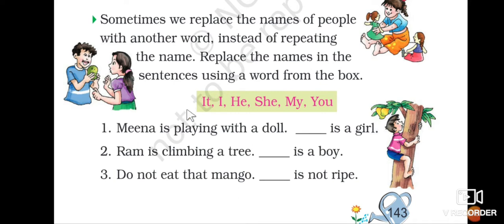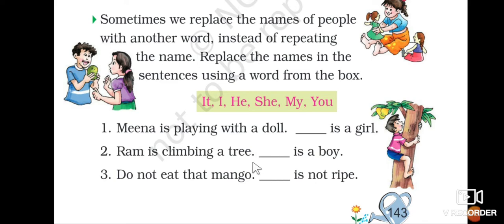Here you can see kuch words given hai: It, I, He, She, My, You. That means name ko replace karna hai. For example, 'Meena is playing with a doll' — Meena doll se play karti hai, 'Dash is a girl' — toh Meena ki jagah hum kya use karte hai? Similarly, 'Ram is climbing a tree' — Ram ek tree climb karta hai, 'Dash is a boy' — toh Ram ke naam ki jagah kya use karna hai?